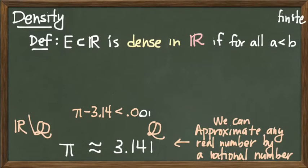For any real numbers A that are less than B, I can find a rational number... there exists a rational... sorry, there exists an element of E with X between A and B.